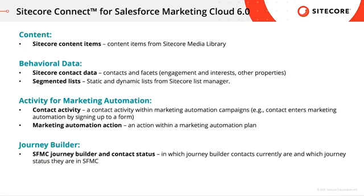Activity for Marketing Automation refers to contact activity within the marketing automation campaign in Sitecore Experience Platform, such as a contact that enters a marketing automation plan by signing up to a form on our website. A marketing automation action refers to an action within such a marketing automation plan.